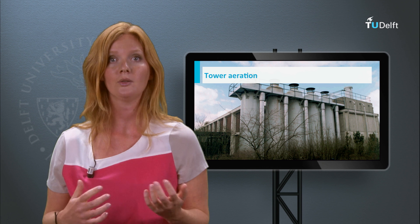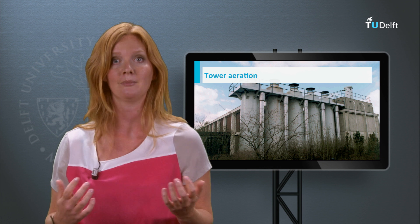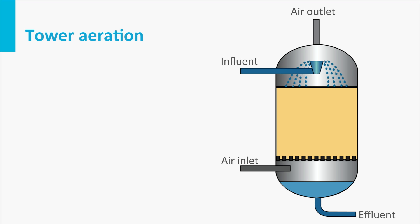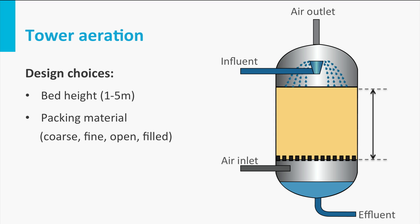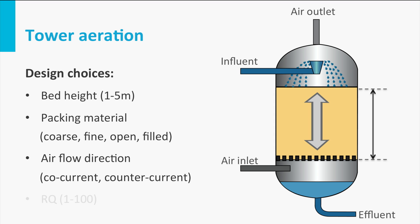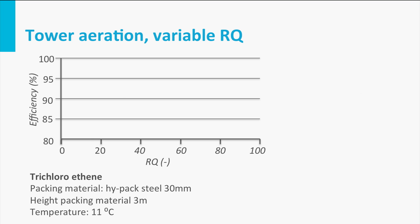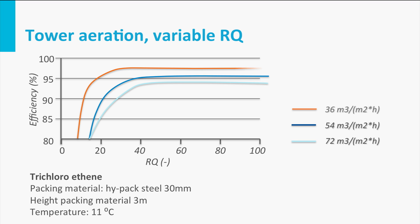Tower aeration is a system where water is distributed over a column with packing material, through which air is blown. With tower aeration, very good removal of gases is possible, and a tower can be configured by a few clear design choices: namely bed height, type of packing material, air flow direction and choice of Rq. Tower aeration is not very sensitive to variations in hydraulic load. It is, however, sensitive to fouling, which makes regular replacement or cleaning of the packing material necessary if the water contains iron.